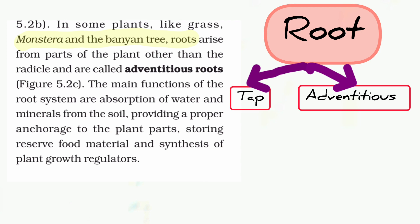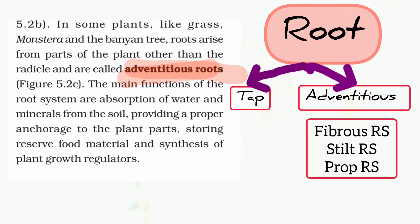The tap root system is the primary root format — the radicle is the origin of the root. Other than the radicle, roots that originate from non-radicle sources form the fibrous root system or the adventitious root system.